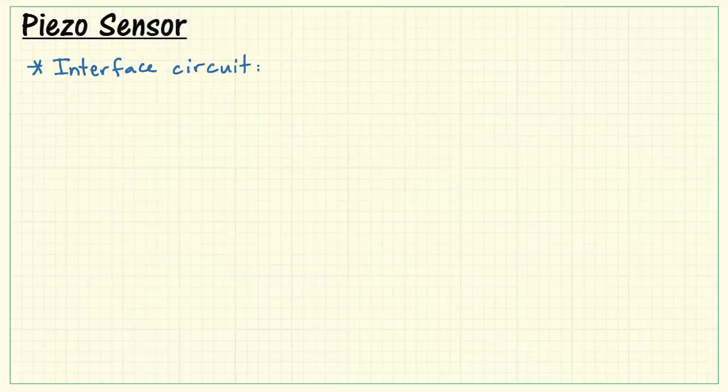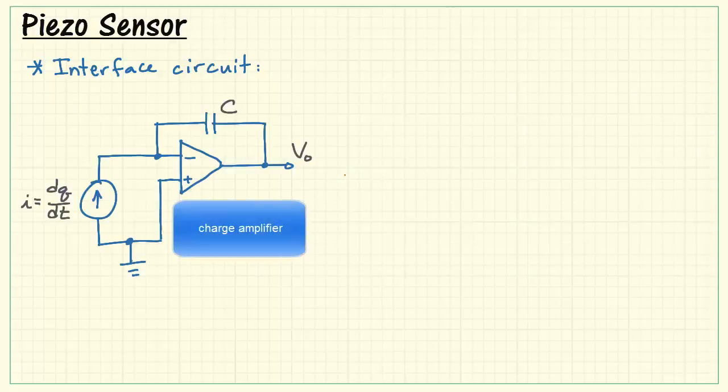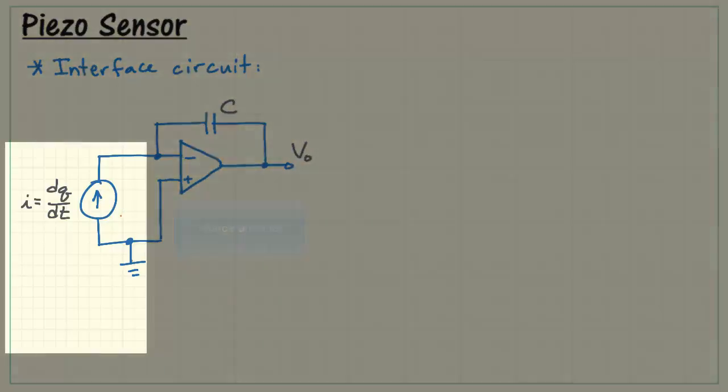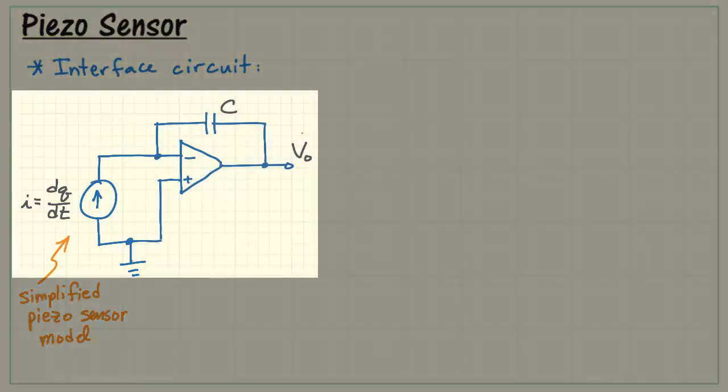Now let's take a look at a circuit that can interface this piezo sensor to the analog input. This is an op-amp-based charge amplifier. Viewing the piezo sensor as a current source, the charge amplifier produces a voltage which is proportional to the time rate of charge, which is also the same thing as current.